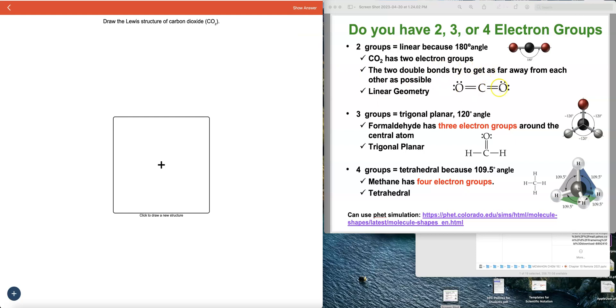So I just pulled one of my slides from my PowerPoint showing the Lewis dot structure for CO2, formaldehyde, and methane, and I'm going to show you how you could use the active homework assignment to draw these Lewis structures.